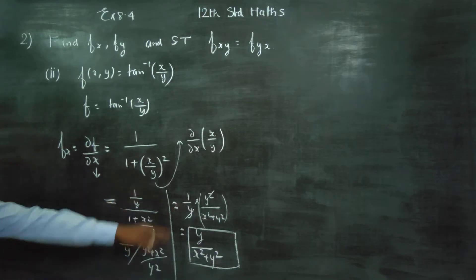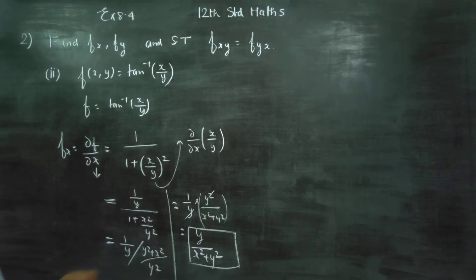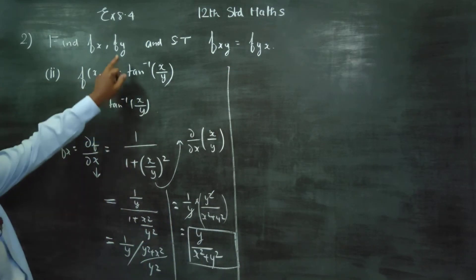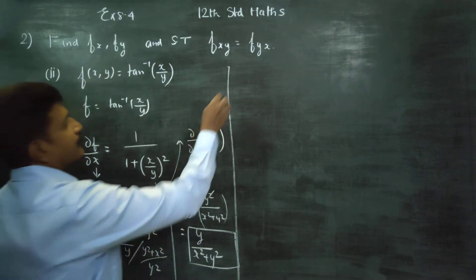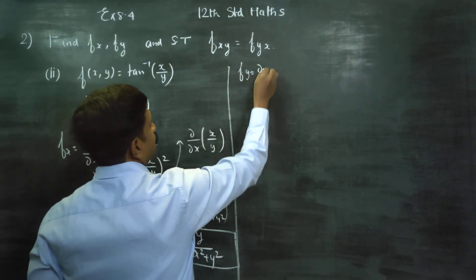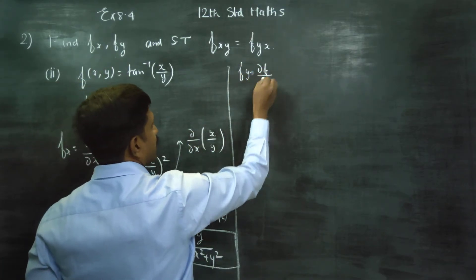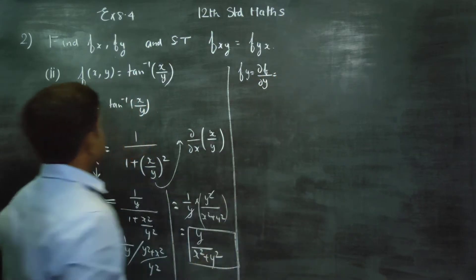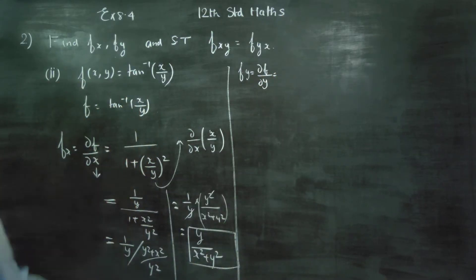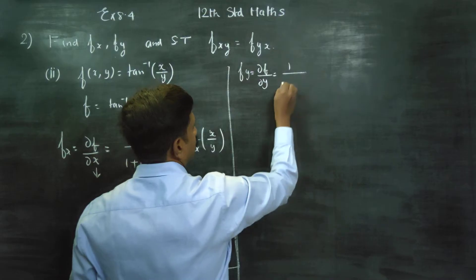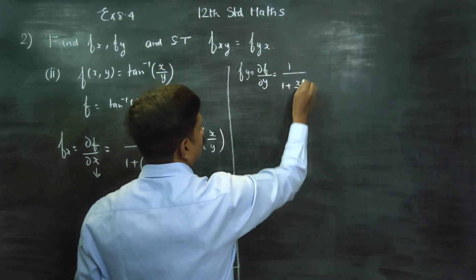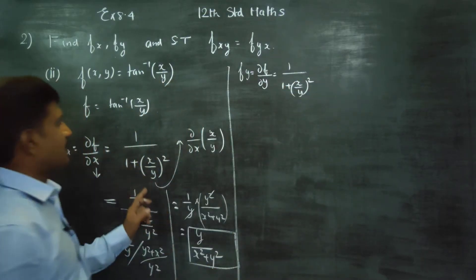After finishing this, I am moving to fy. fy means dou f by dou y. Same concept: 1 by 1 plus x by y whole square — tan inverse differentiate using the same concept.